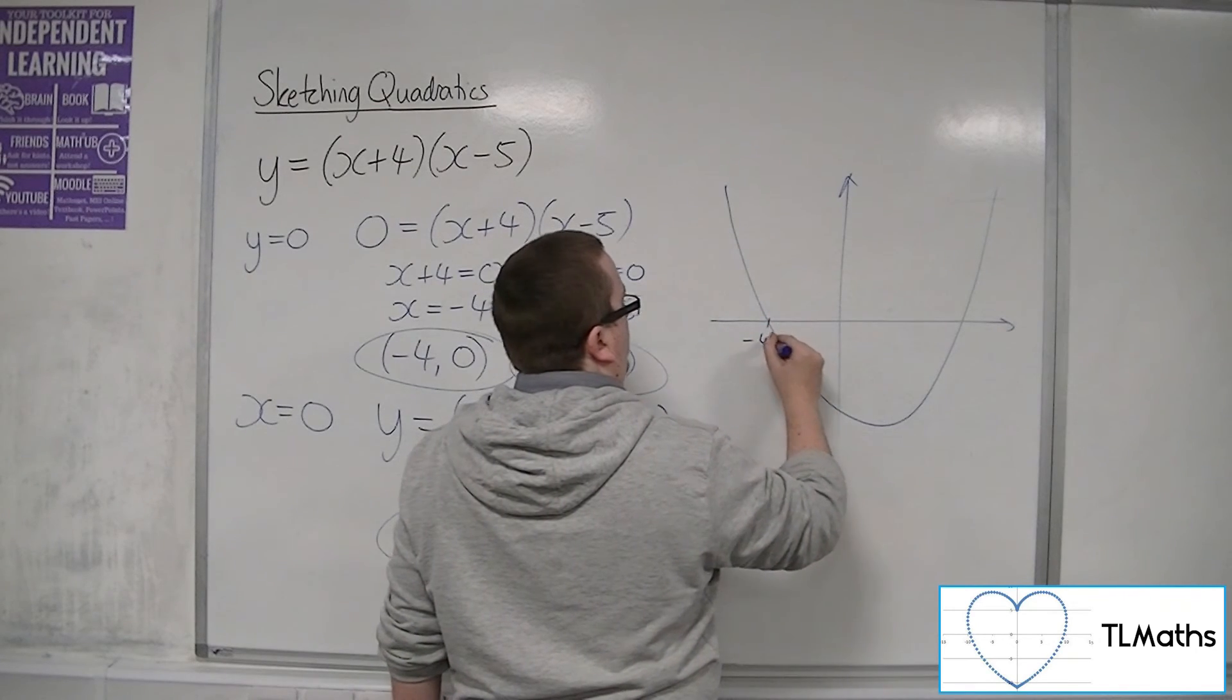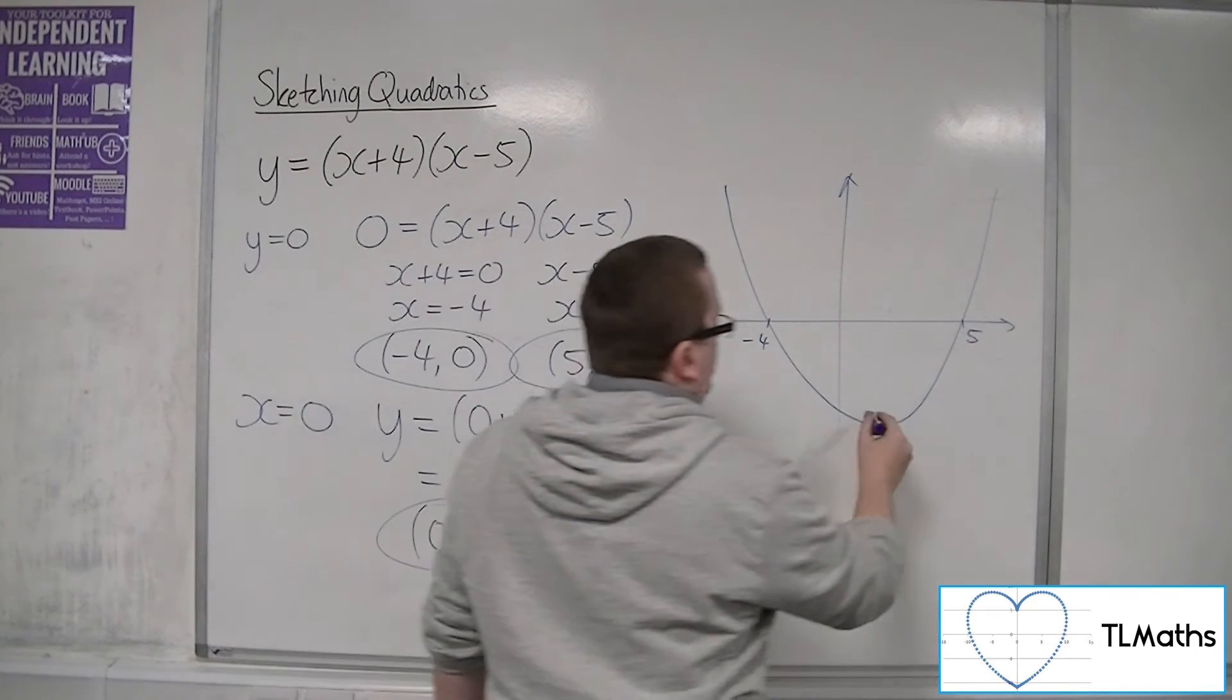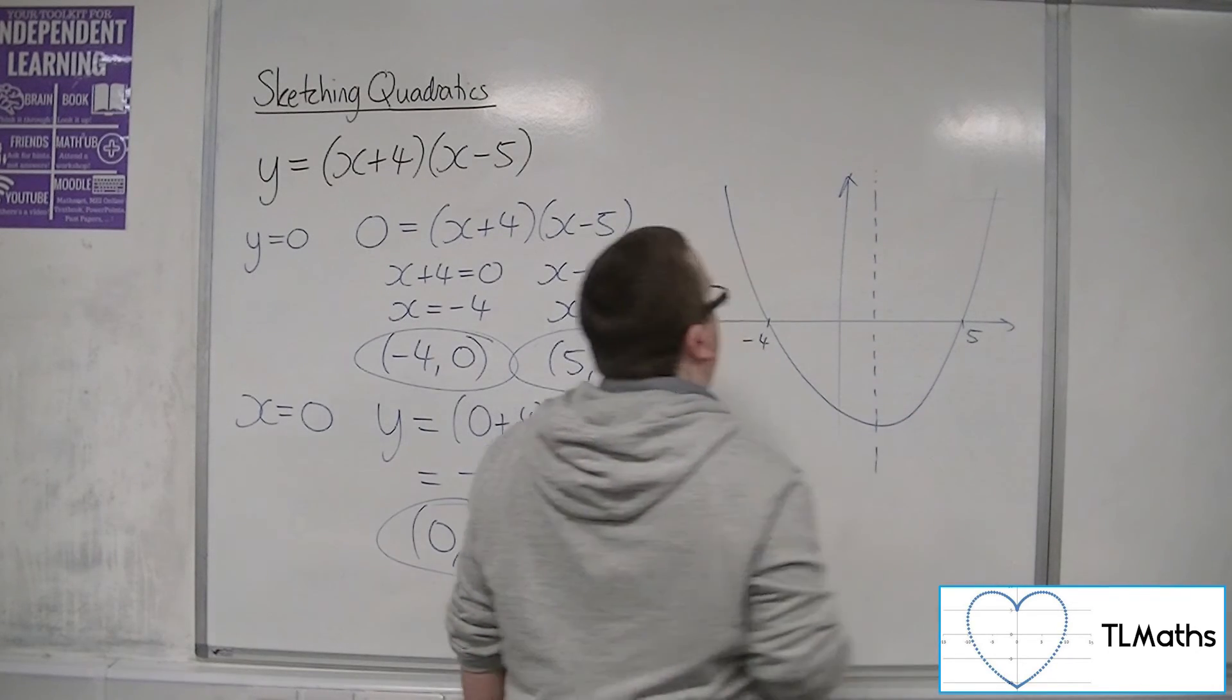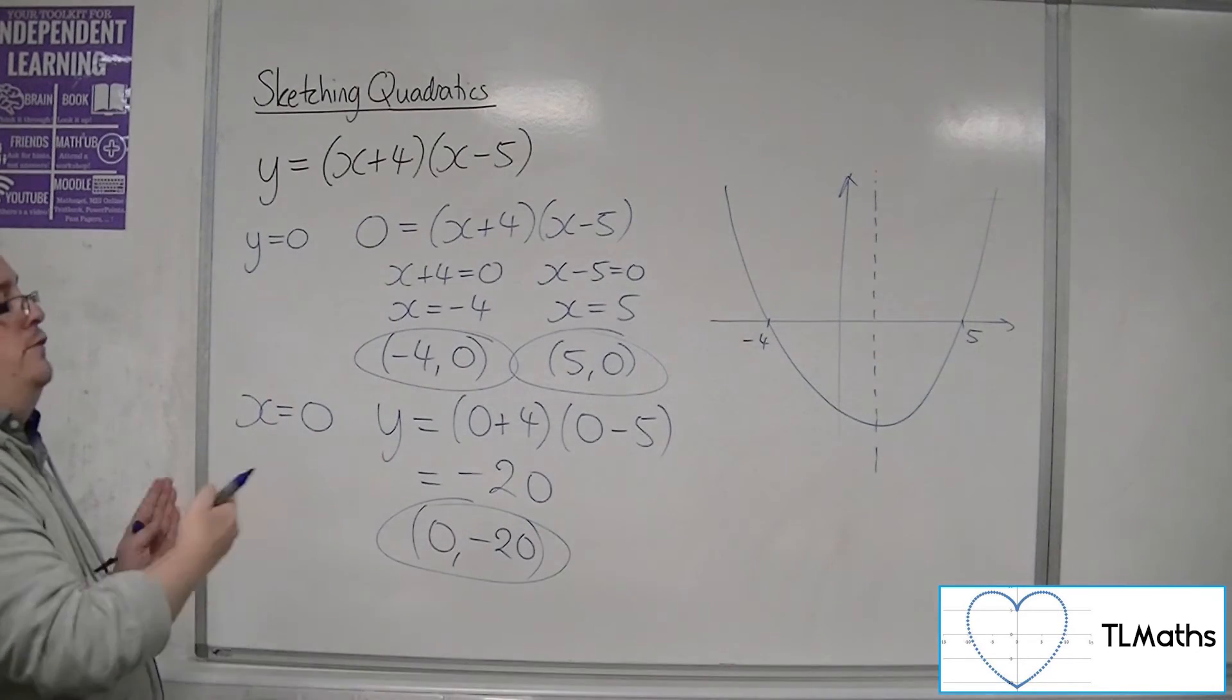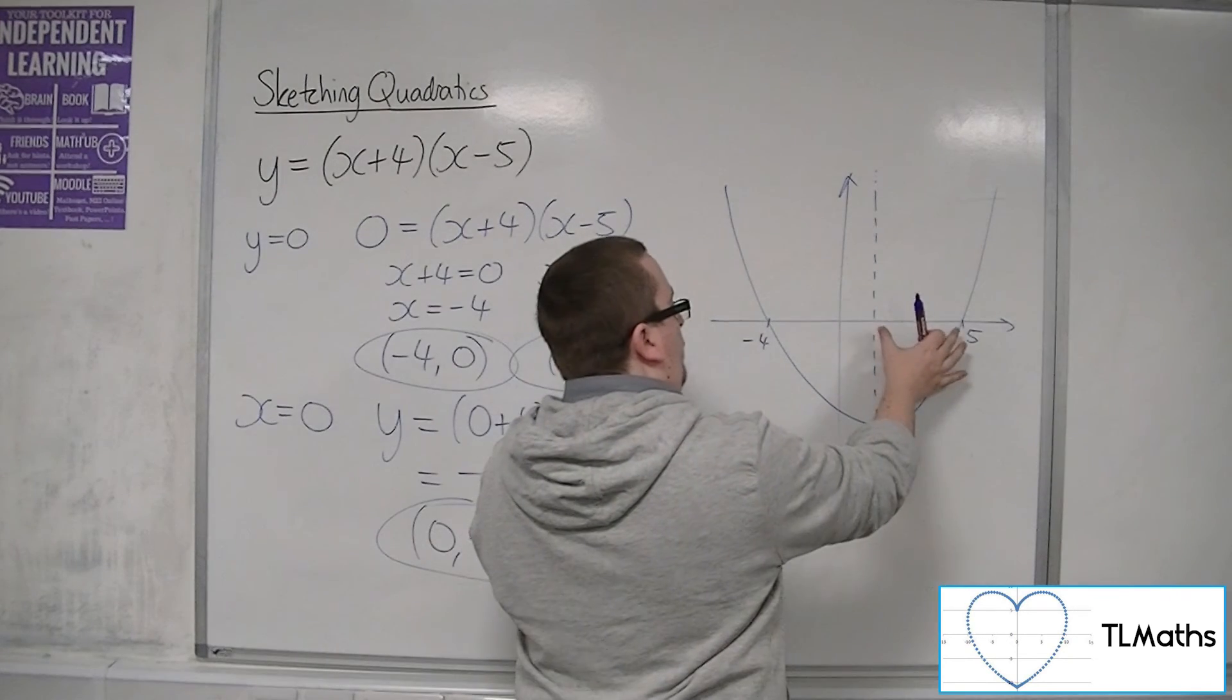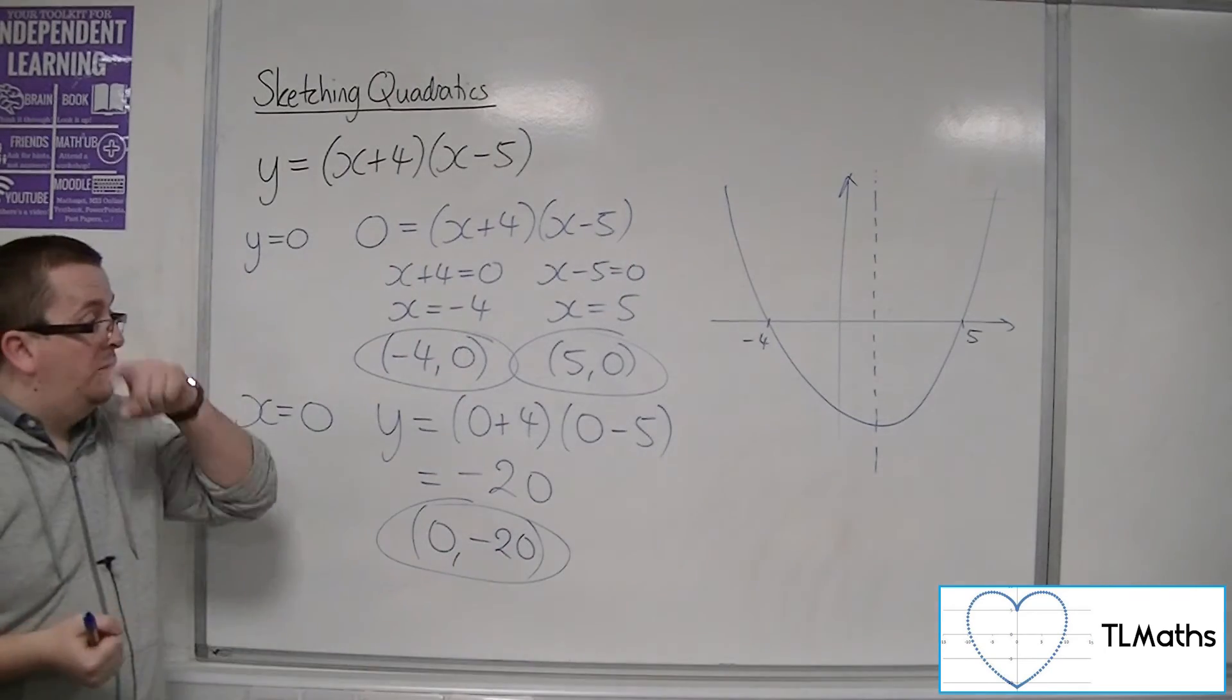That will be -4. That will be 5. So, what you're looking for is that line of symmetry. It should be slightly over to the right-hand side, because the curve is further over, because it's going through 5 there, than 4 there, minus 4.